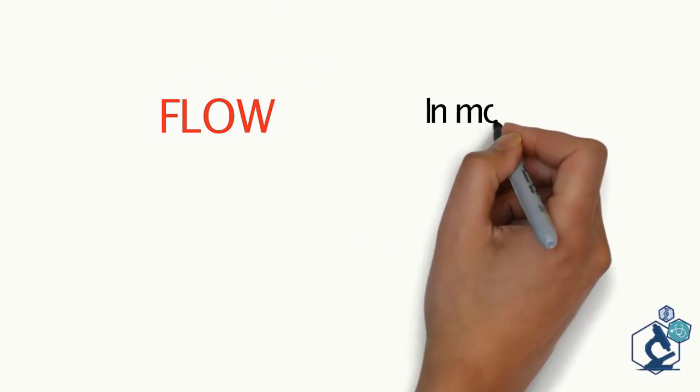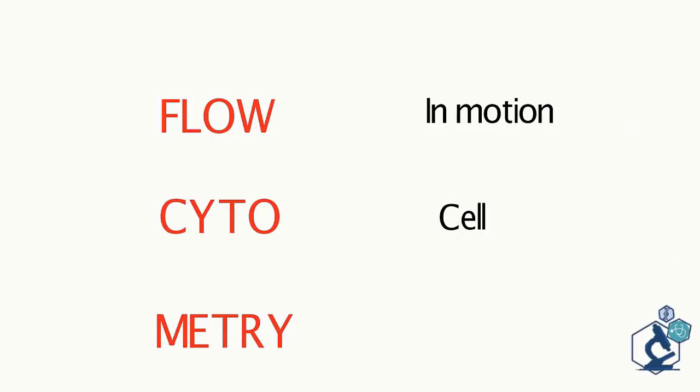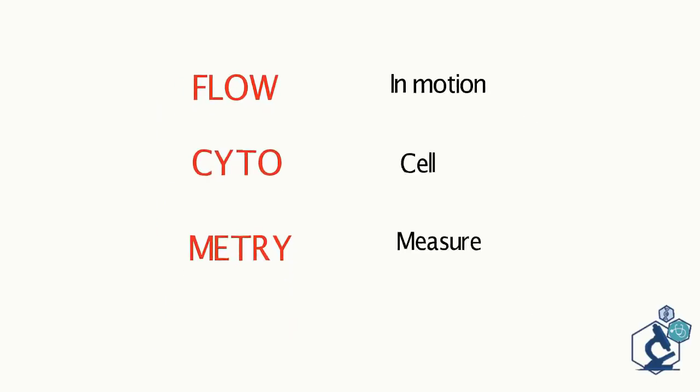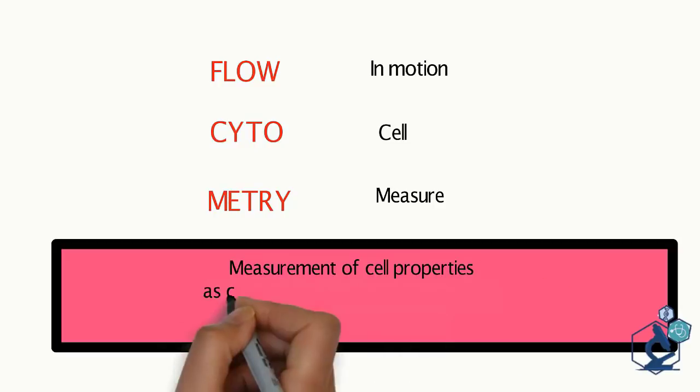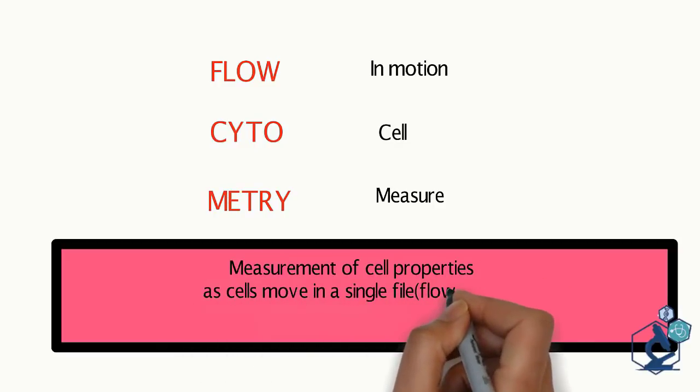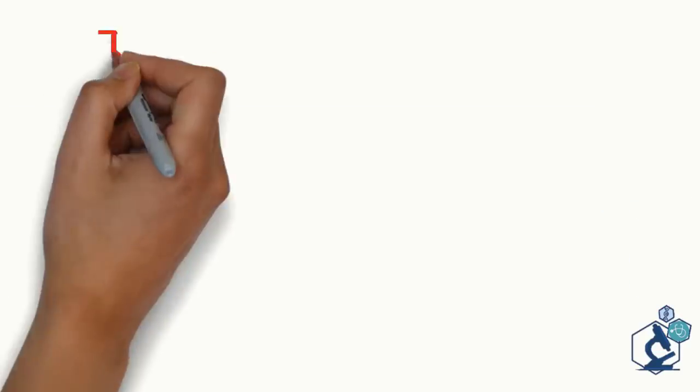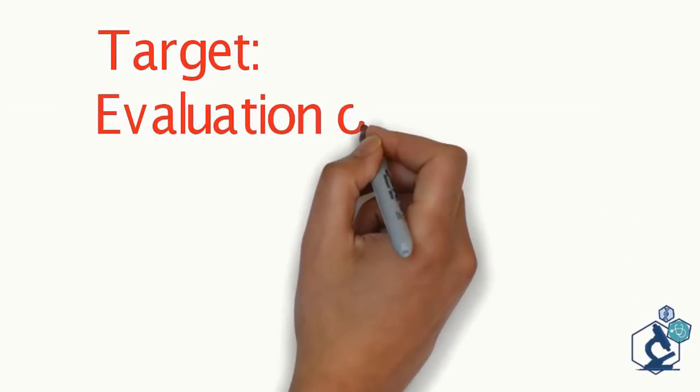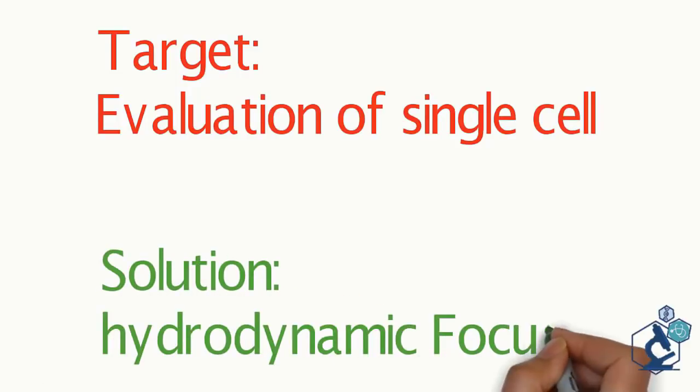We split the term flow cytometry into three parts: flow means in motion, cyto means cells and metri stands to measure. So flow cytometry is the measurement of numerous cell properties as the cells move in a single file in a fluid column while being interrupted by a beam of light. Our target in flow cytometry is evaluation of properties of single cells. Hydrodynamic focusing is the key to this.